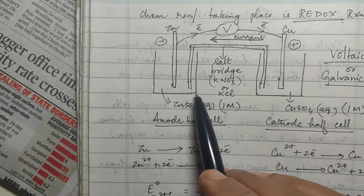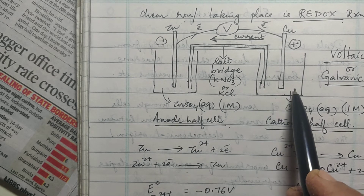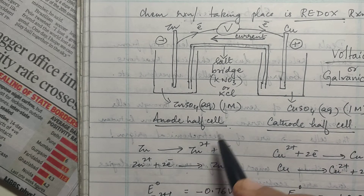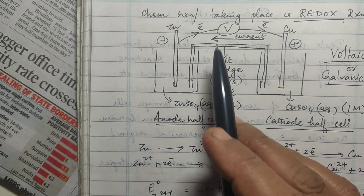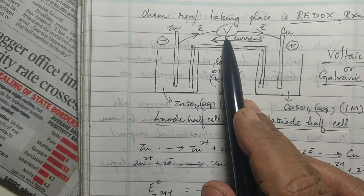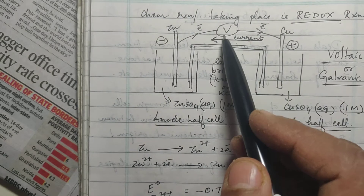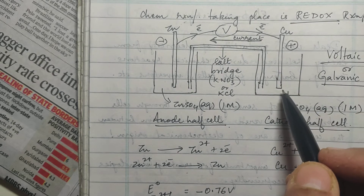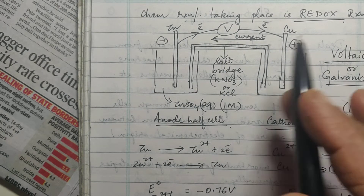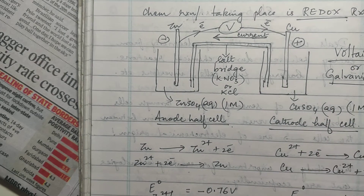Where there is a deficiency, the salt bridge compensates: since Zn²⁺ is in excess at the anode, NO₃⁻ ions shift toward that electrode; and where Cu²⁺ is deficient at the cathode, K⁺ ions move there — solving the electrical imbalance. The voltmeter connected to the cell gives a reading showing how much electrical energy is produced. If there is no voltmeter reading, the anode and cathode assignments are wrong and need to be swapped.